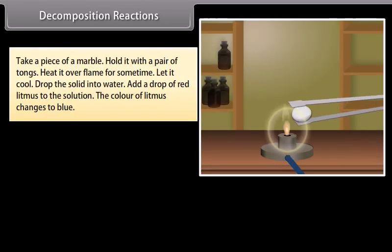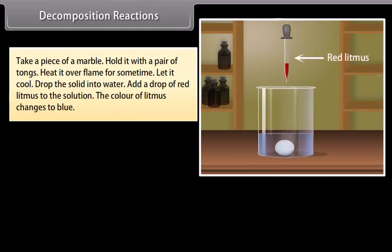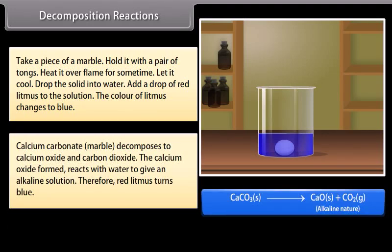Marble decomposition activity: Take a piece of marble, hold it with tongs, and heat it over a flame for some time. Let it cool, then drop it into water. Add a drop of red litmus — the color changes to blue. Calcium carbonate (marble) decomposes to calcium oxide and carbon dioxide. The calcium oxide formed reacts with water to give an alkaline solution, so red litmus turns blue.